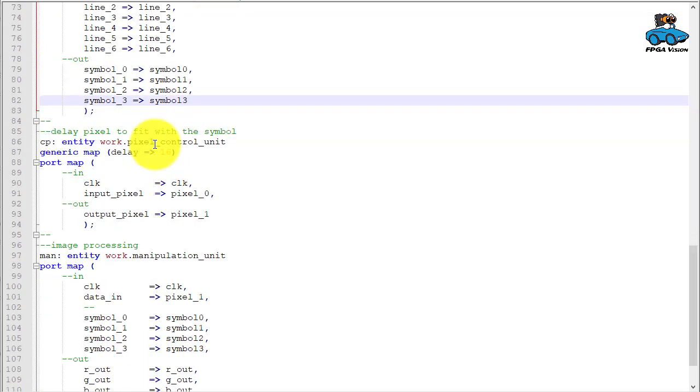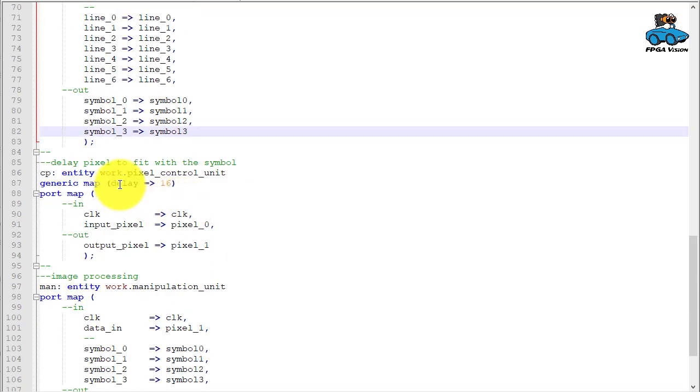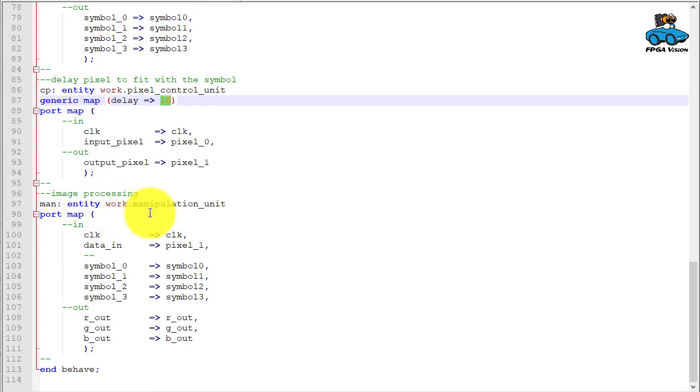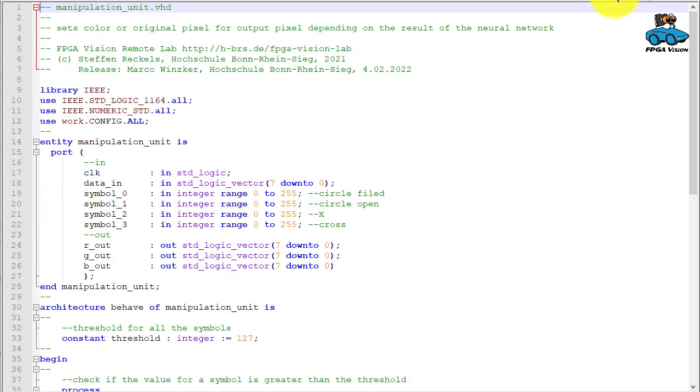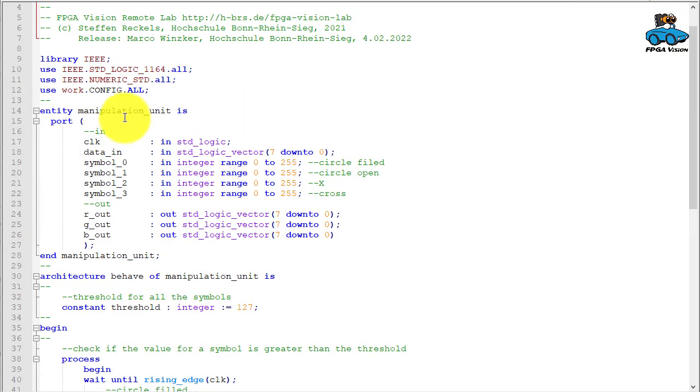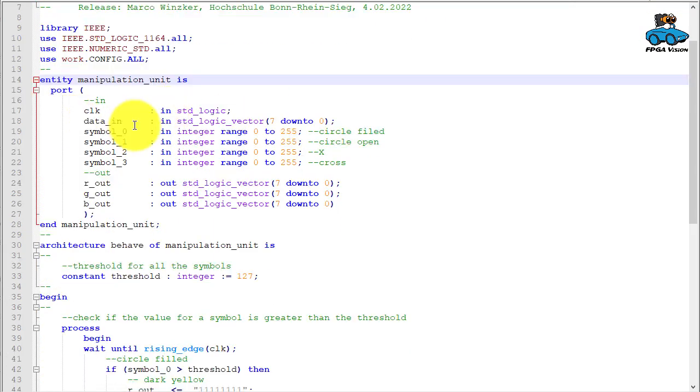Back to NPU. Here we have a delay of this center pixel. This is just a delay by 16 clock cycles. And then the result of the neural network and this center pixel goes into the manipulation unit to generate the output information. And this is the manipulation unit. So here we have the symbols.